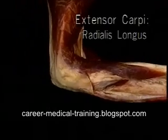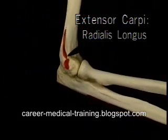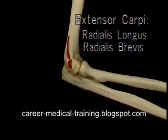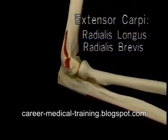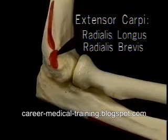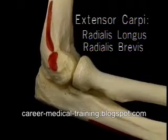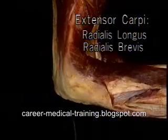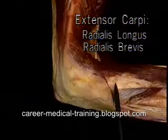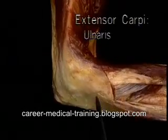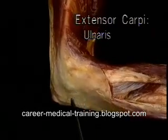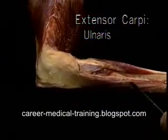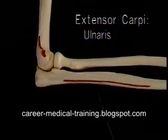Extensor carpi radialis longus arises from the lateral epicondylar ridge just below brachioradialis. Extensor carpi radialis brevis arises from the lateral epicondyle, an origin which it shares with several other extensor muscles. They all arise together from the epicondyle and from the common extensor tendon. Extensor carpi ulnaris arises from this border of the ulna.